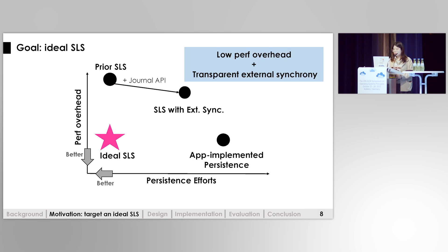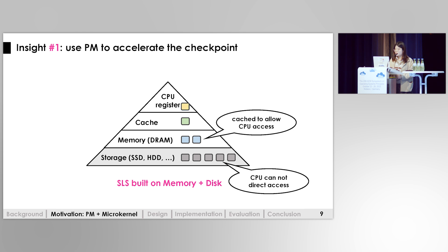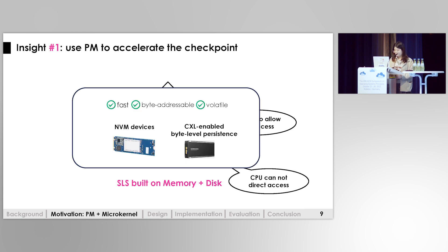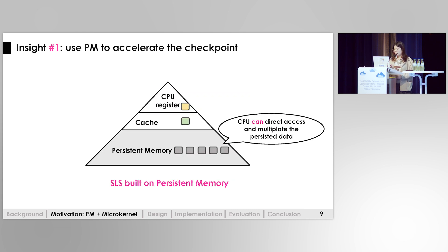We target to provide an ideal single-level store with both low performance overhead and transparent external synchrony. We first address the performance issue with two insights. Our first insight is to revisit single-level store with persistent memory. Previous single-level store systems had to cache data in memory to allow CPU access. But with fast, byte-addressable and persistent memory, things have changed. This fast, byte-addressable memory is a perfect single-level memory — the CPU can directly access and manipulate persisted data on it, so runtime data are directly persisted.